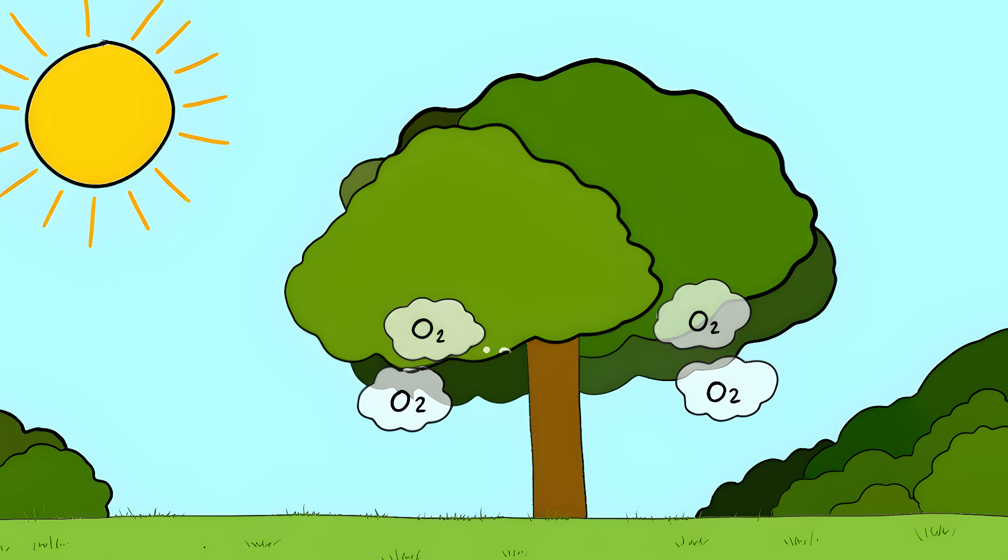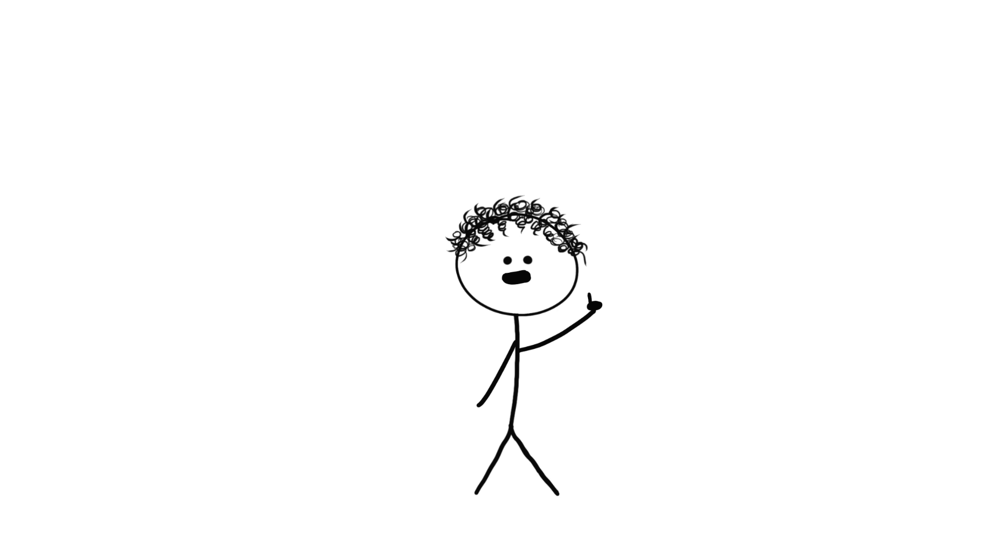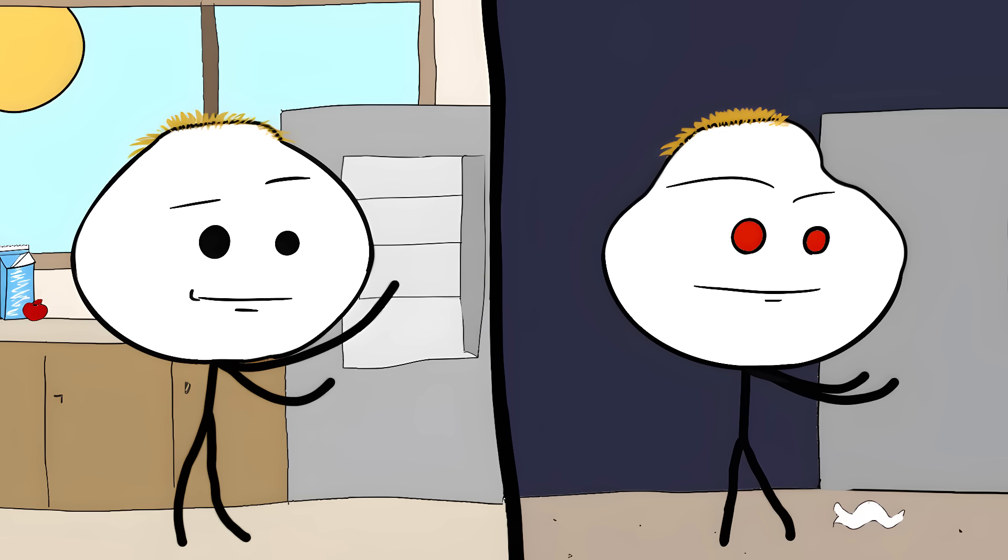The Amazon does make oxygen during the day through photosynthesis. But at night, those same plants need oxygen to survive, just like us. It's like having a roommate who stocks the fridge during the day but raids it at night.